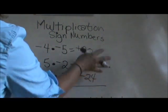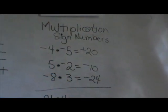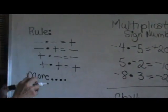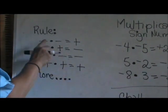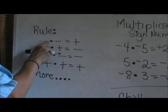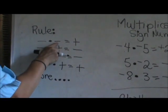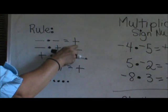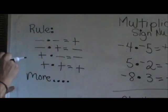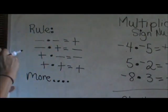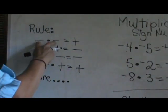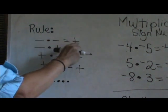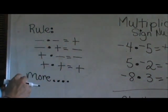Now let's stop and go look at our rules. Here are the rules of multiplication. When you have a negative times a negative, you're going to get a positive. The way I think about that is two negatives always come in pairs. So if you have two negatives, they pair up and become a positive.